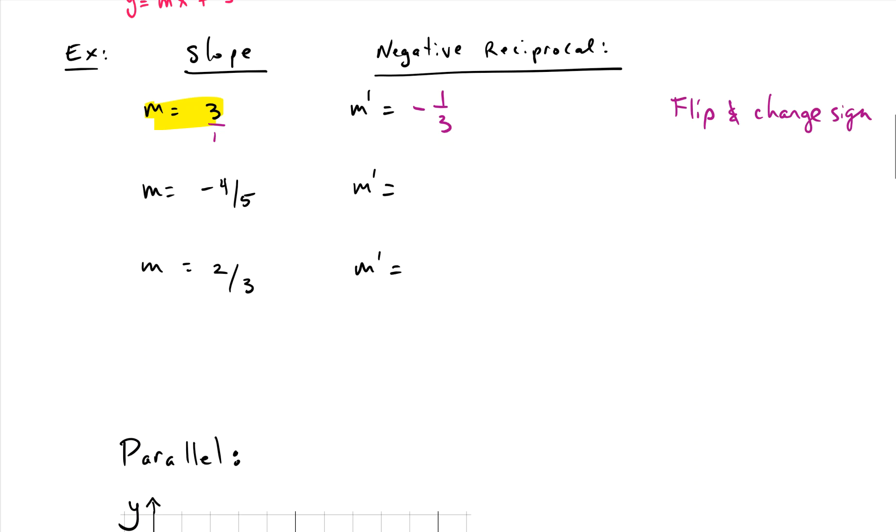So if we start out with negative four-fifths, the negative reciprocal is five-fourths because we flip it and change the sign. If we start out with two-thirds, the negative reciprocal is three-halves and then we make it negative. So finding the negative reciprocal is pretty simple. We just flip the fraction and change the sign. If it starts out negative, it goes positive. If it starts positive, it goes negative.